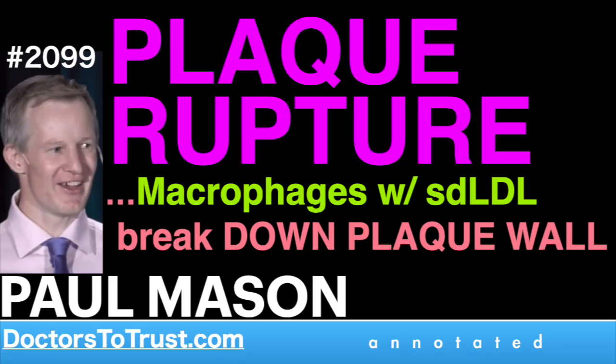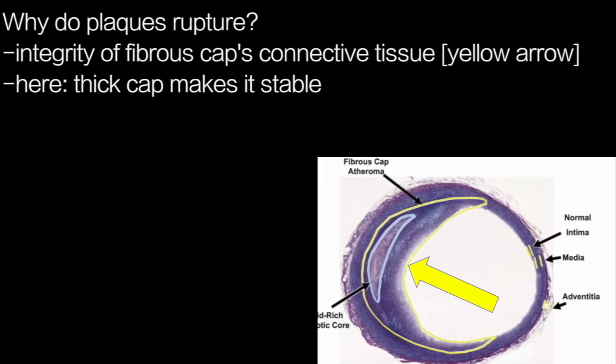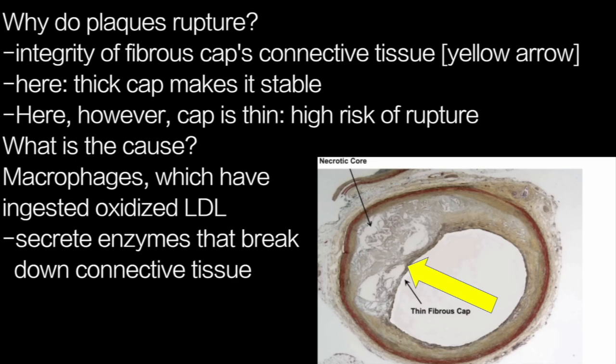What's going on inside a plaque to make it susceptible to rupture? It depends mainly on the integrity of the fibrous cap of connective tissue, shown here by the yellow arrow. In this example with a thick cap, this plaque is quite stable. Compare it to this plaque which has a thin fibrous cap — this plaque is at high risk of rupturing.